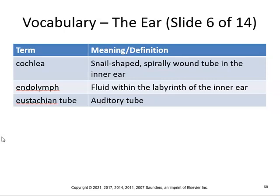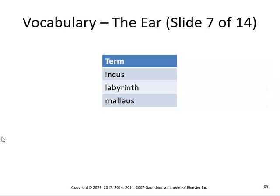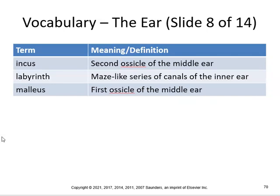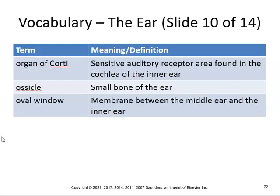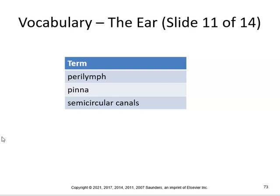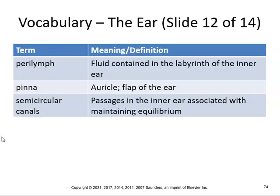The cochlea is a snail-shaped, spirally wound tube in the inner ear. Endolymph is fluid within the labyrinth of the inner ear. The incus is the second ossicle of the middle ear. The labyrinth is a maze-like series of canals of the inner ear. The malleus is the first ossicle of the middle ear. The organ of Corti is the sensitive auditory receptor area found in the cochlea. An ossicle is a small bone of the ear. The oval window is the membrane between the middle ear and inner ear. Perilymph is fluid contained in the labyrinth of the inner ear. The pinna/auricle is the flap of the ear. The semicircular canals are passages in the inner ear associated with maintaining equilibrium.